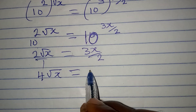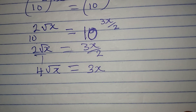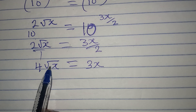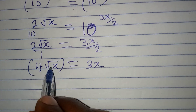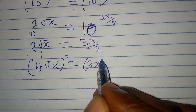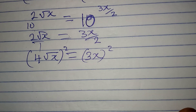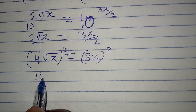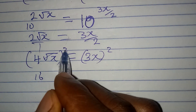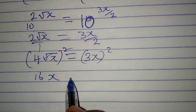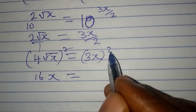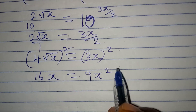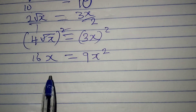At this point we will take the square of both sides so that this square root will be eliminated. The whole of this is squared, so 4 squared gives us 16, and then the square root and the square cancel, leaving us X, equal to 3 squared which is 9, then X squared will appear.